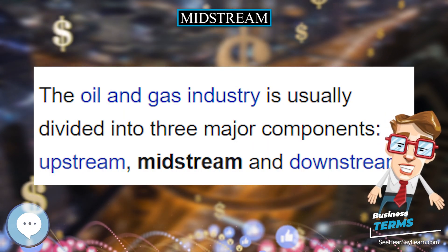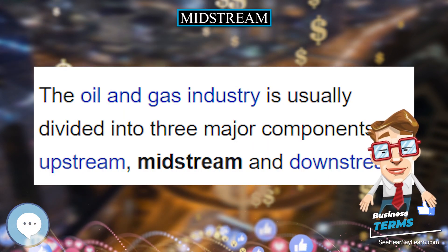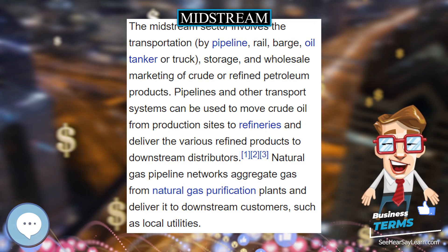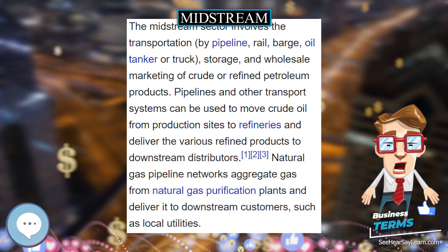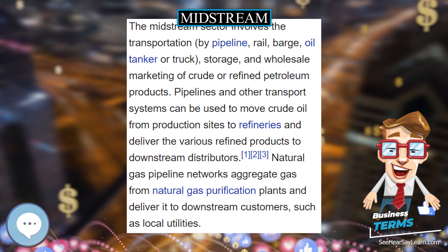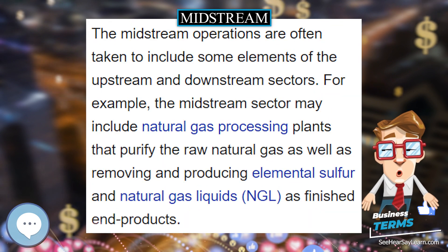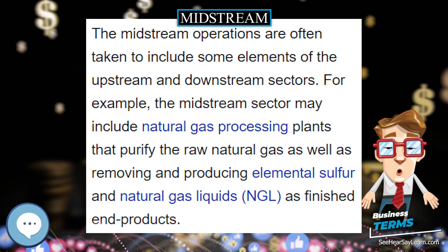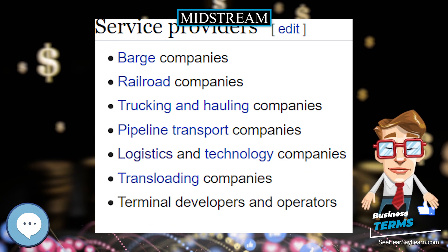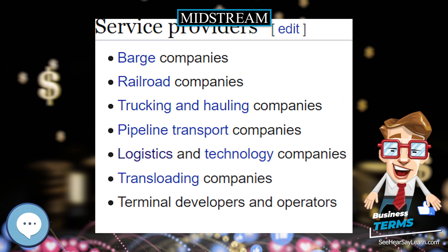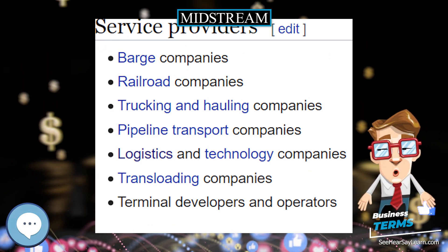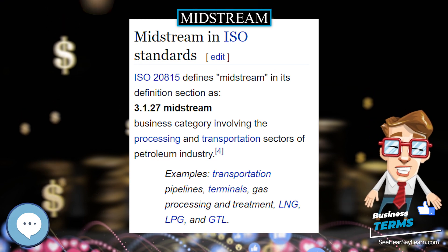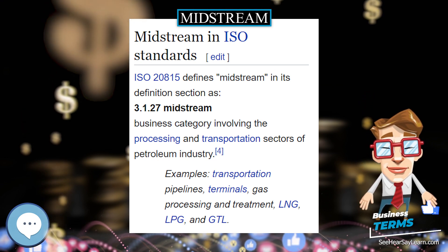The midstream sector involves the transportation — by pipeline, rail, barge, oil tanker, or truck — storage, and wholesale marketing of crude or refined petroleum products. Pipelines and other transport systems can be used to move crude oil from production sites to refineries and deliver the various refined products to downstream distributors.